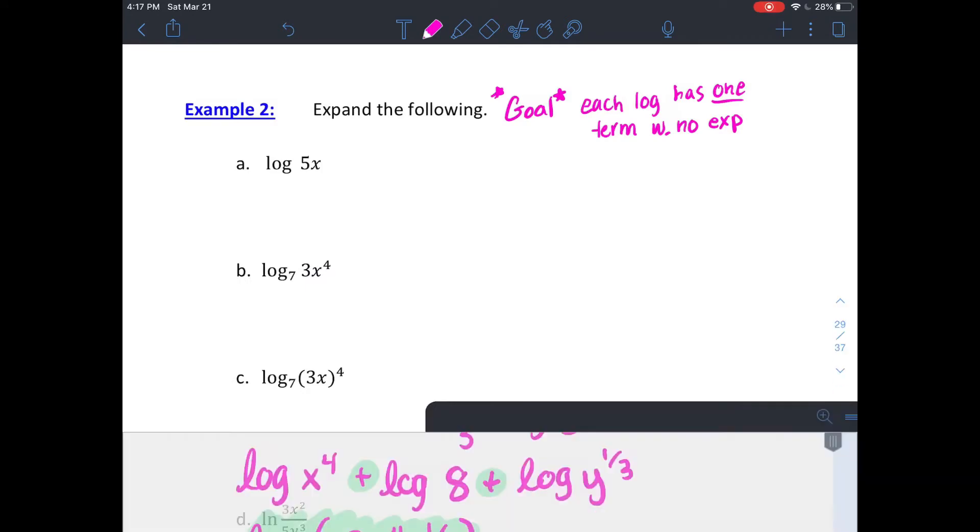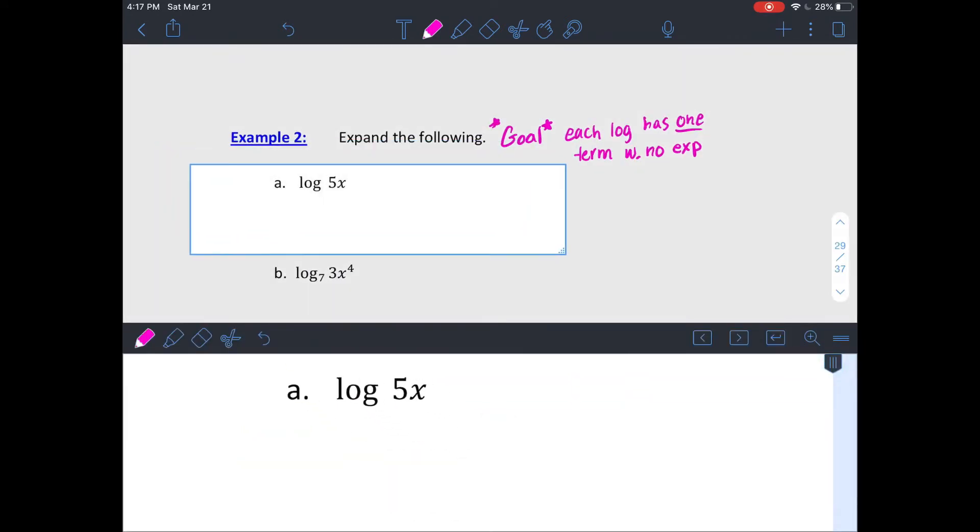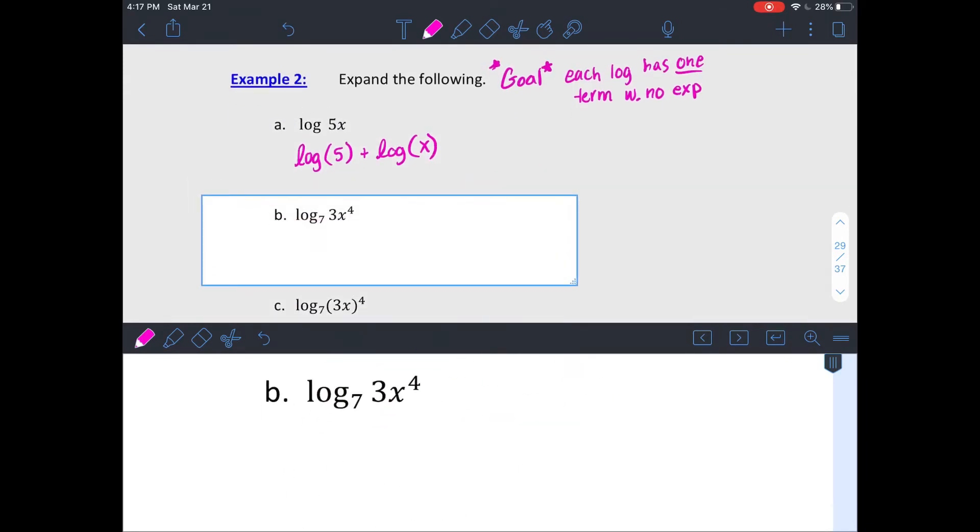Now we're going to go the other way. We're going to expand it out so that each logarithm is separate and only has one thing inside. So this was multiplication of 5 times x. I can expand that into two separate logs being added.